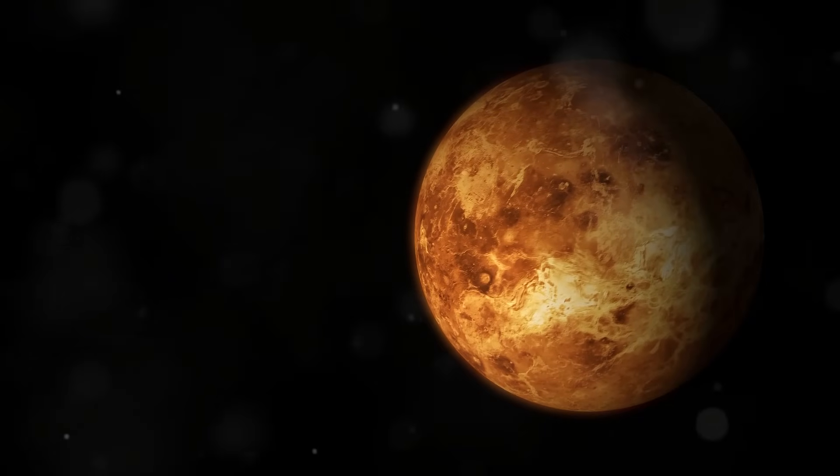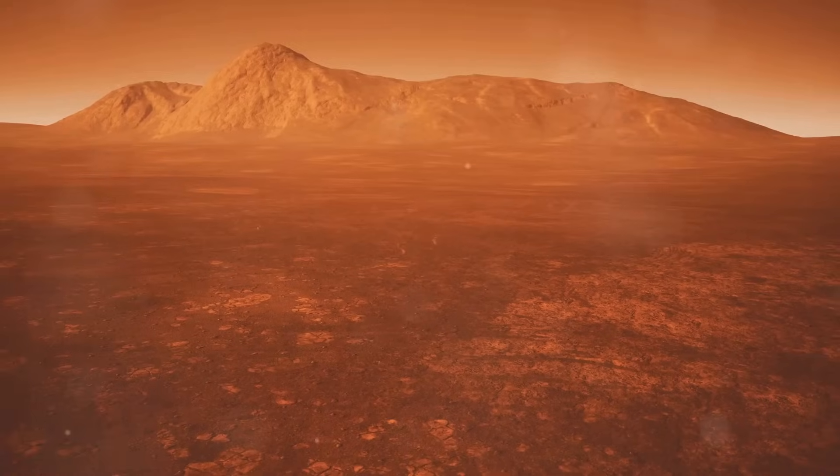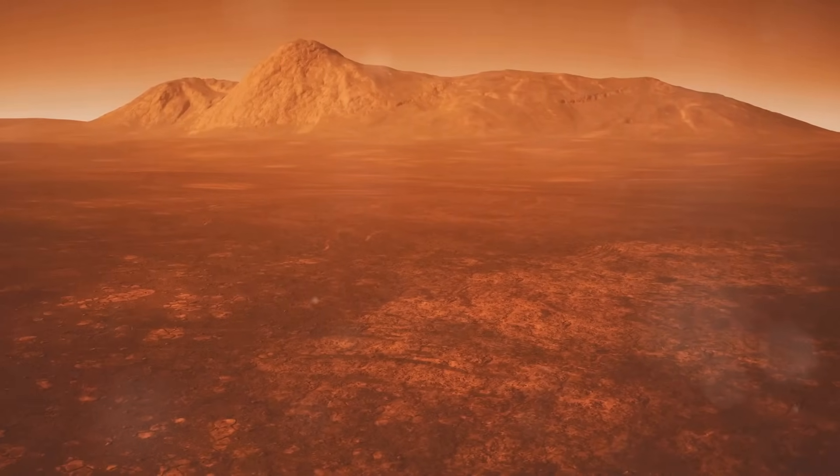It's not too hot, like Venus, where temperatures soar to unbearable levels, making it impossible for life as we know it to survive. Venus, with its thick toxic atmosphere and scorching surface, is a stark contrast to the life-supporting environment of Earth.